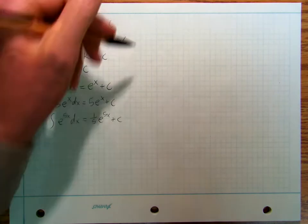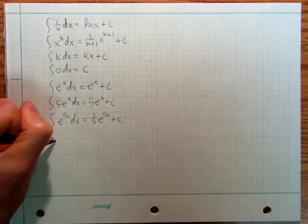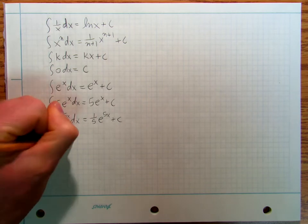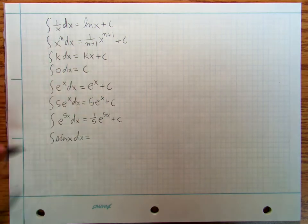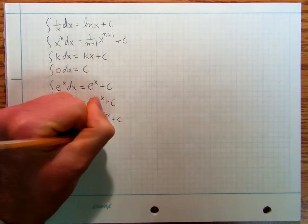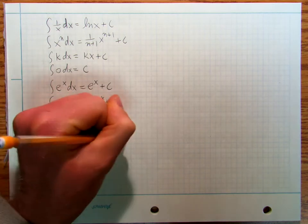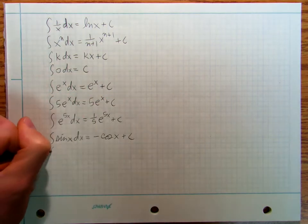And then we've got our trig, so we've got the integral of sine x dx is going to be negative cosine x plus c.